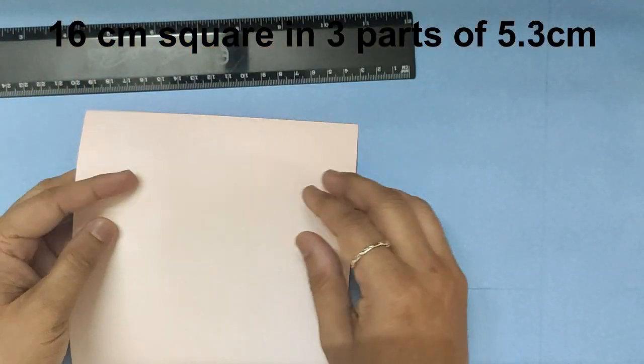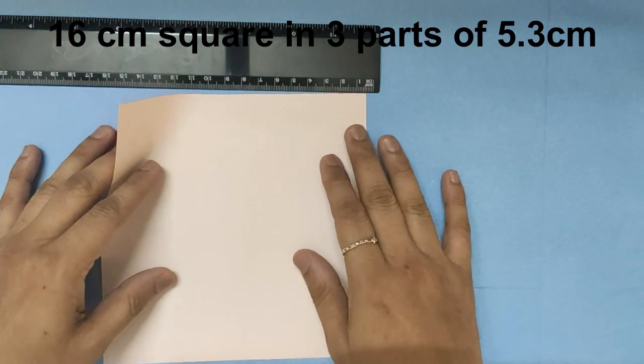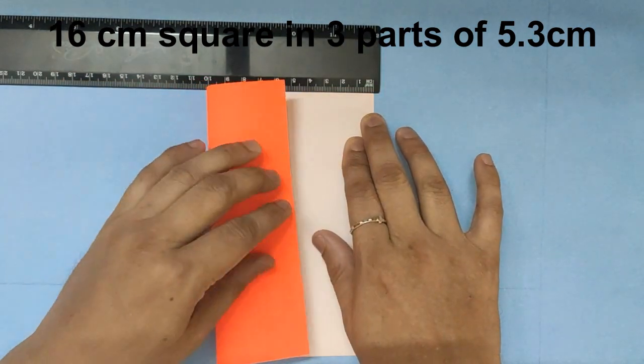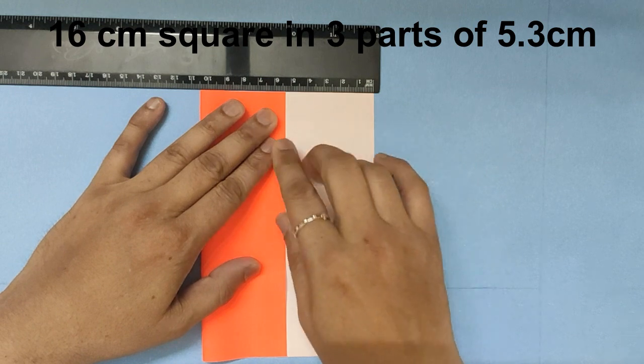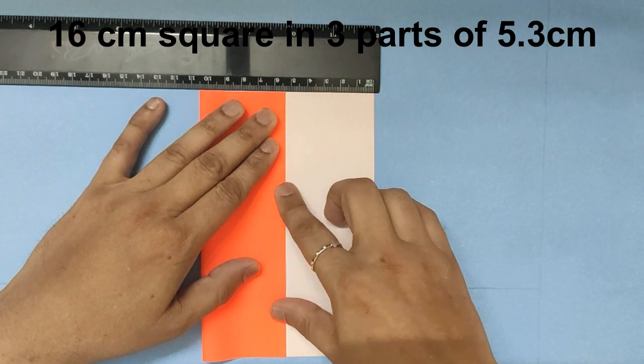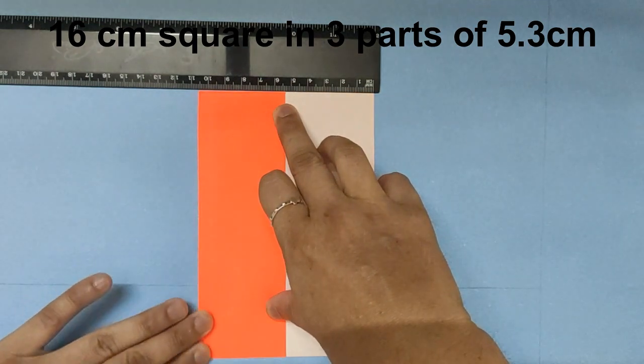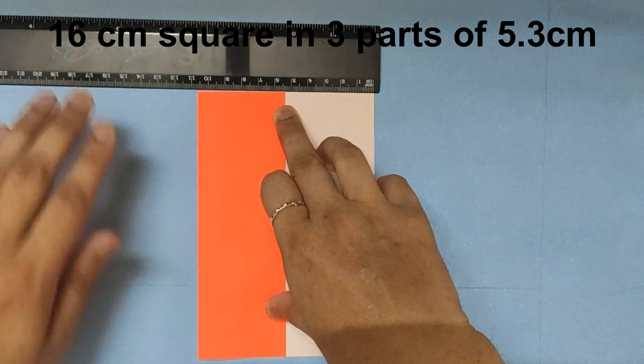We take a paper. I have taken a 16 cm by 6 cm paper and I have folded it to one-third, that is 5.3 cm. You can also fold it the way I showed in the previous video.